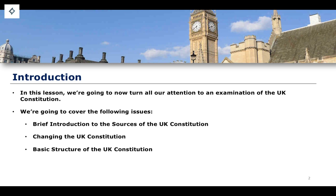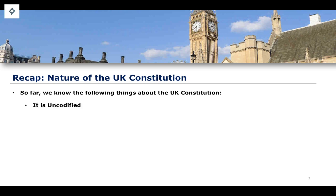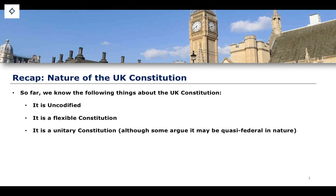We're going to talk in far more detail about the sources and the principles and the basic structure of the UK Constitution as we go on throughout the rest of this series on constitutional law. As a brief recap, we know the following things about the UK's constitutional framework. We know that our Constitution is, one, uncodified. We know that it is a flexible Constitution as a result of the fact that it is uncodified, and this is what brings with it this idea of flexibility versus rigidity.